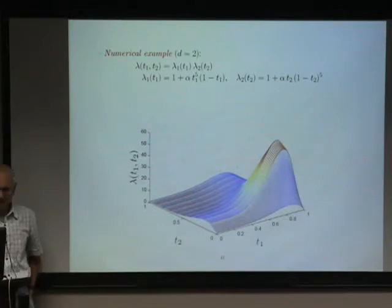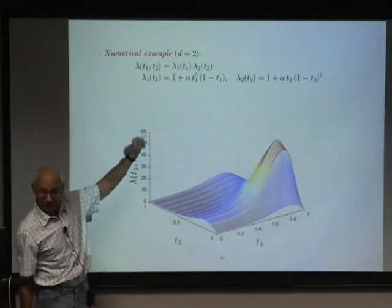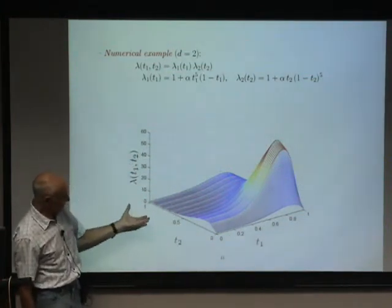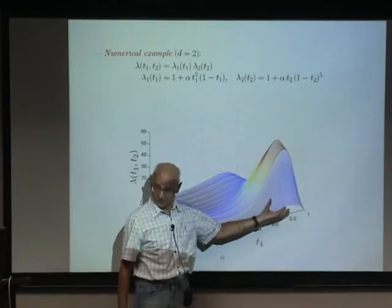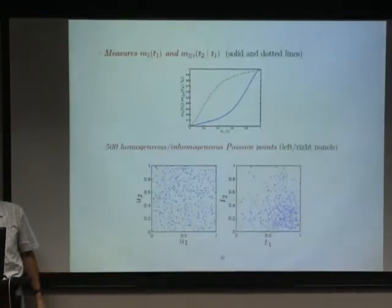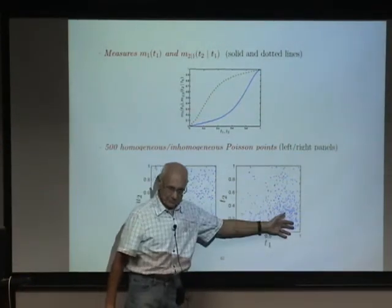And here it's an example of this type. This is lambda. As you see, the variables are separable. Right? This is how it looks. So, what's going to happen? It's going to push lots of points in this area because it's higher intensity. And this is how it looks, the homogeneous part. And then the transformation map there.